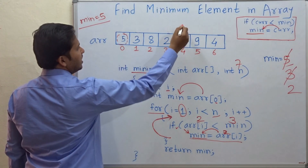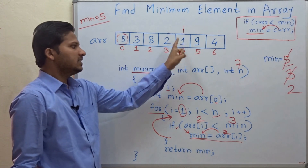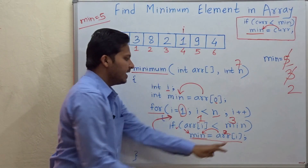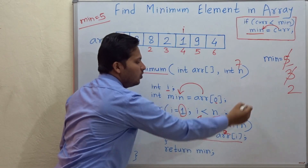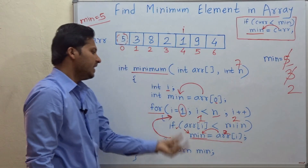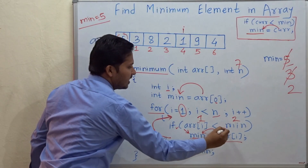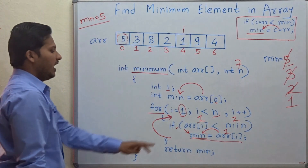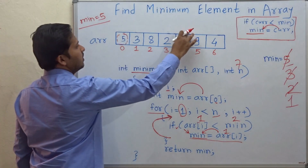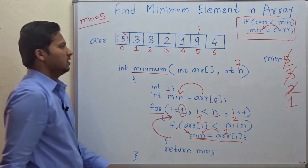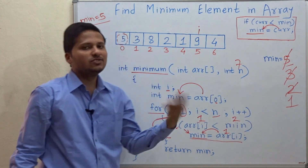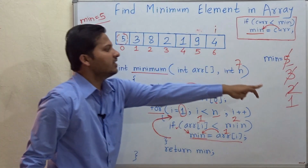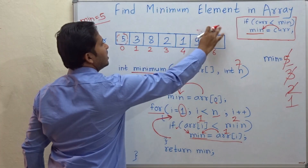i is incremented. Check whether 1 is less than 2 — the minimum variable value is now 2. Yes, 1 is less than 2, so 1 is assigned to the minimum variable and minimum becomes 1. We go to the next iteration. Check whether 9 is less than 1 — no, it is not, so we directly increment i. Check whether 4 is less than 1 — no, it is not, so we directly increment i.